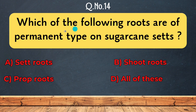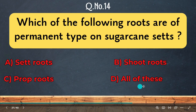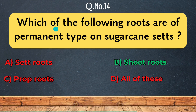Question 14: Common bread wheat (2N = 42) is — Diploid, Hexaploid, Triploid, or Tetraploid. The correct answer is Hexaploid. Question 14b: Which of the following roots are of permanent type on sugarcane sets? The correct answer is Sett roots.